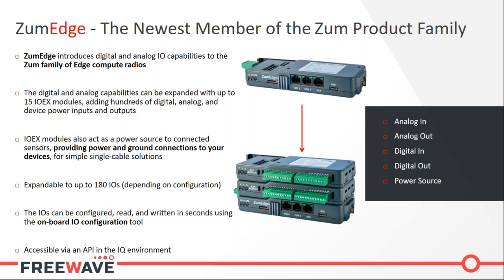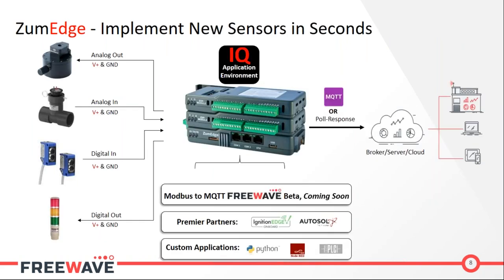The IO EX modules come in three different flavors, allowing for customization to any sensor configuration. Users can create new analog in/out, digital in/out, and device power source lines. Any analog or digital device can be powered and connected directly to the IoT network with no extra hardware or special programming. Once sensors are connected, the IQ application environment opens a wide range of options for intelligence at the edge, including custom and open source applications like Node-RED or OpenPLC, as well as FreeWave's upcoming Modbus to MQTT tool, currently in beta.